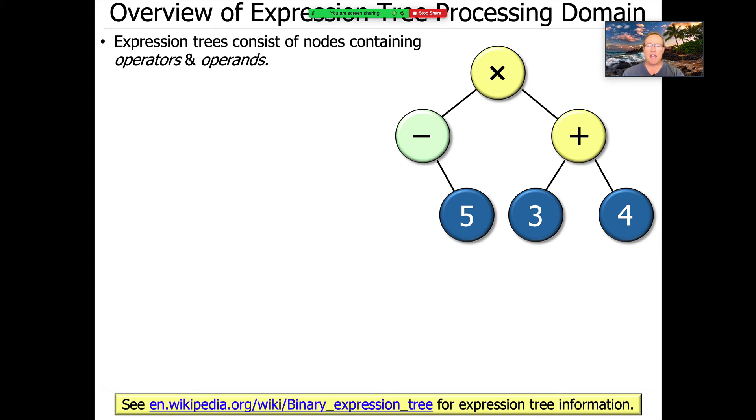So in our domain, we have expression trees that consist of nodes, and those nodes contain either operators or operands. And I suspect you know what an expression tree is. Hopefully, you learned about this in your data structures course. Hopefully, you learned what a binary tree was. But if for some reason you need to refresh, take a look at the link at the bottom of the page.